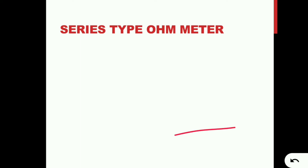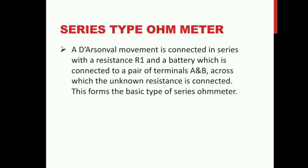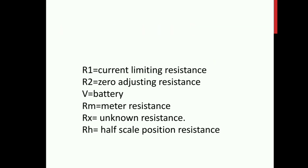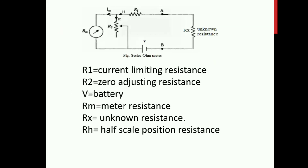Here is the series and shunt type ohmmeter. The PMMC movement is connected in series with resistance R1 and the battery, which is connected across terminals A and B, across which the unknown resistance is connected. This is the basic series-type ohmmeter. The current flowing through the movement depends on the magnitude of the unknown resistance.